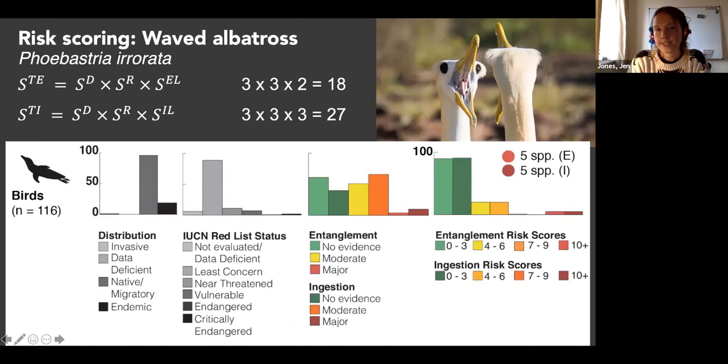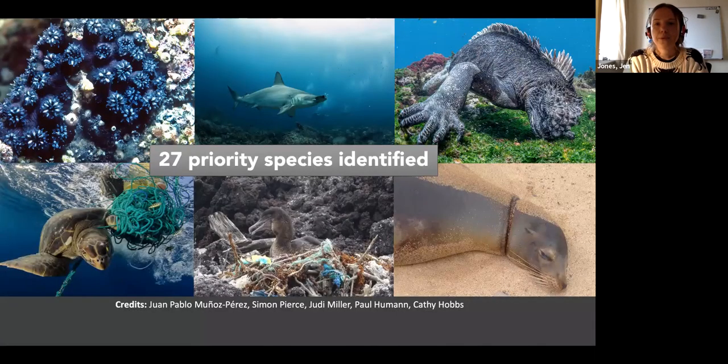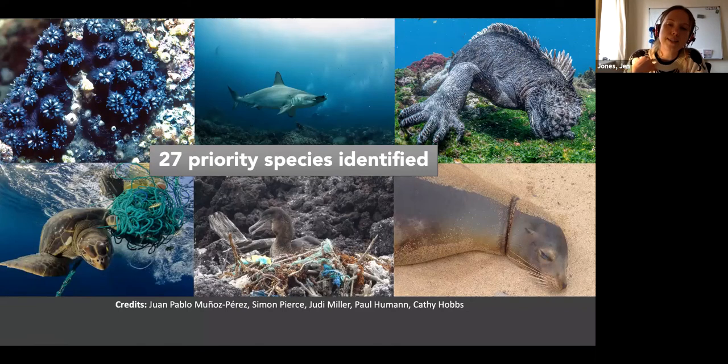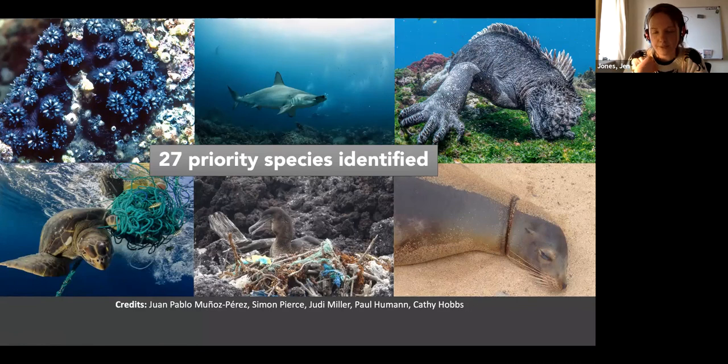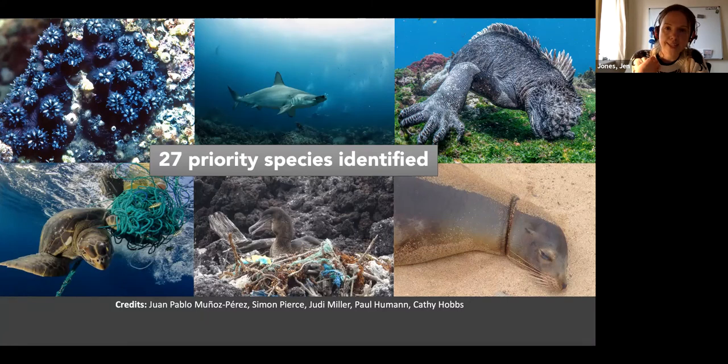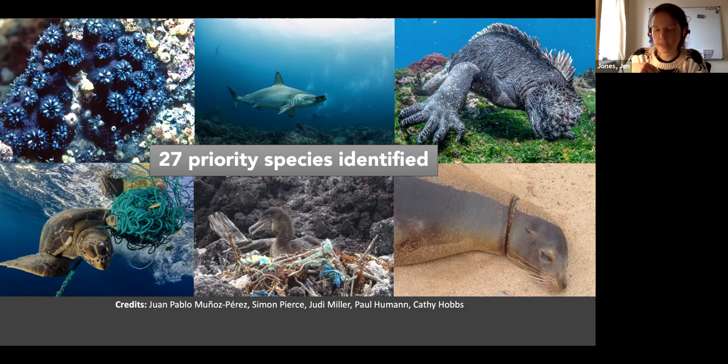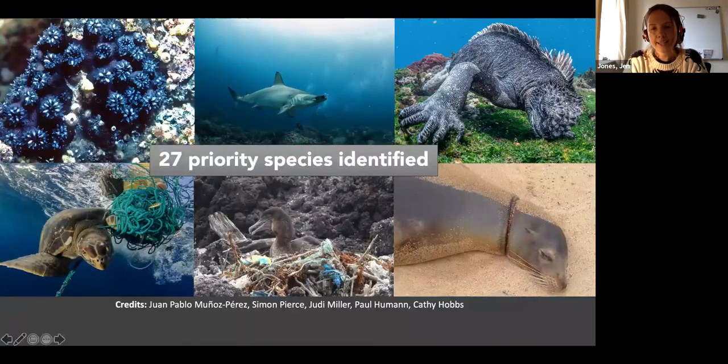Not going to go into that now. Again, if anybody's interested in learning more about the scoring, we're happy to have a call about that later. But yeah, what this has managed to do is to give us a tool to start to focus the next phase of research and to start focusing the mitigation and intervention projects that are a major part of this network. Of course, we know that there will be more species that are likely to be affected than just these, and we need to do more research to understand how this harm manifests itself. But at least it gives us somewhere to start from, you know, from the 3,000 species that we had to start with.